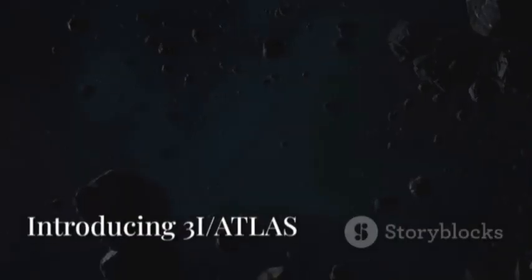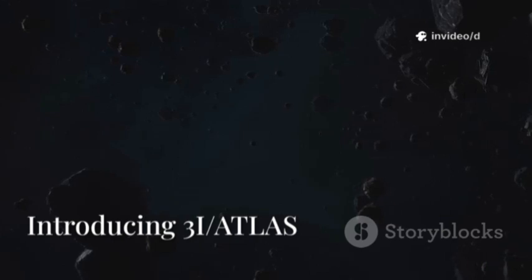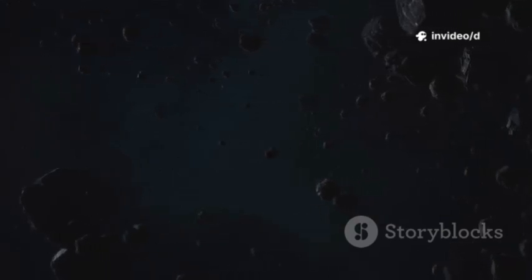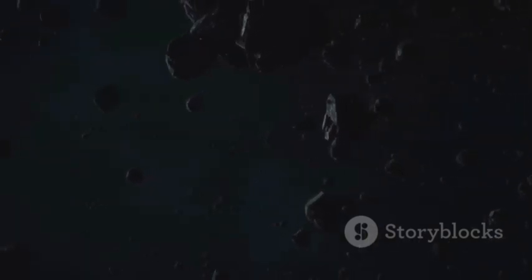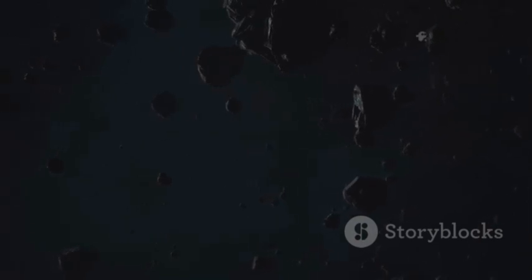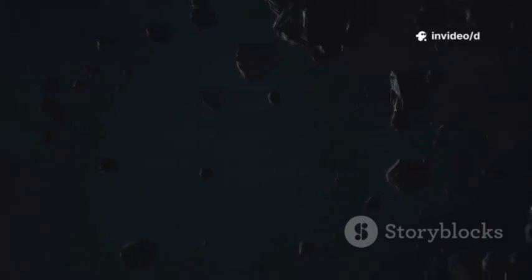Our solar system is a busy place, teeming with planets, moons, asteroids, and comets all orbiting the sun in a cosmic dance that has lasted billions of years. Every day, countless objects, large and small, move through this vast expanse, creating a dynamic environment that astronomers have studied for centuries.